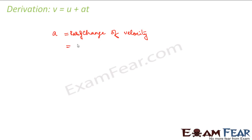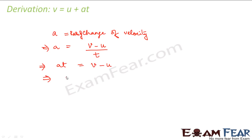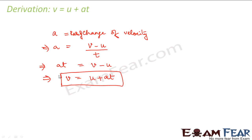Acceleration is rate of change of velocity. That means change of velocity with time: a = (v − u) / t. From this, at = v − u, which gives us v = u + at. So this first equation of motion is simply another representation of the definition of acceleration.